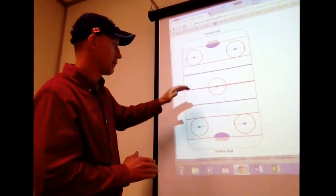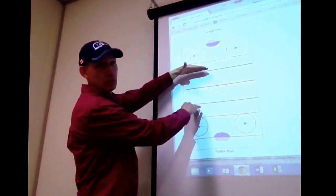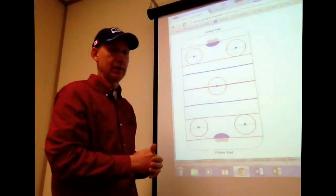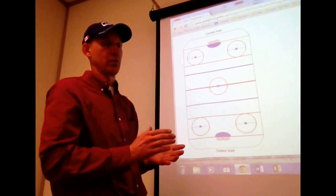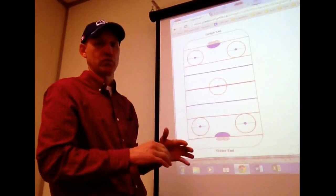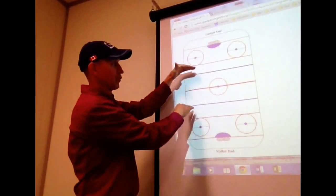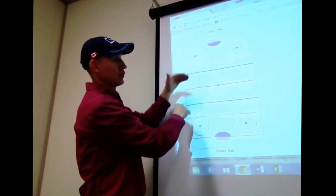So again, back to the neutral zone, it's between the two blue lines. And once again, it doesn't matter, it does not change when you change from one net to the other. It's always the neutral zone. So if we're referring to the neutral zone, we're referring to the area of the ice between the two blue lines.